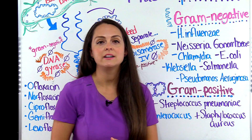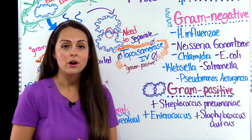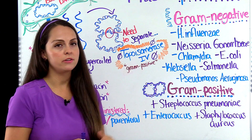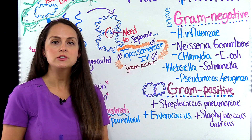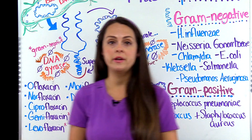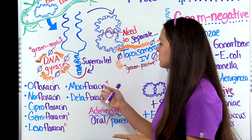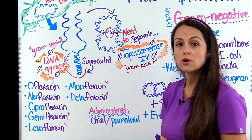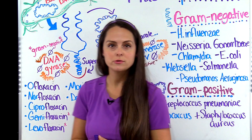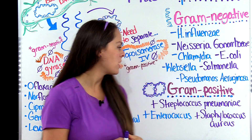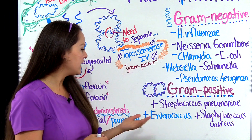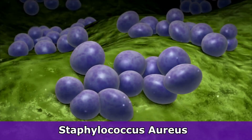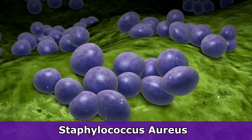The gram-positive bacteria that this group targets includes Streptococcus pneumoniae, especially the newer quinolones — which are the ones with the little pink star beside them, which we're going to go over in a moment — and Enterococcus and Staphylococcus aureus.